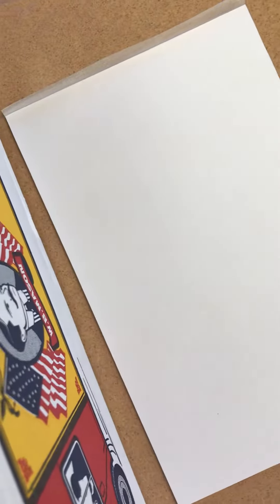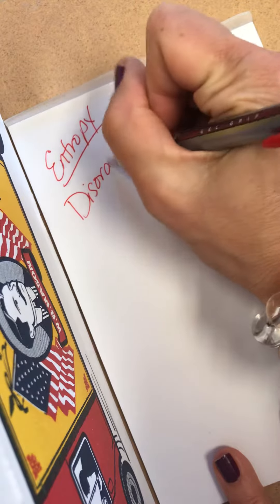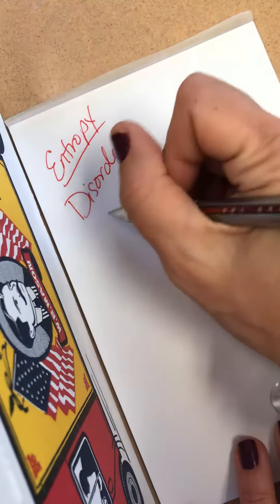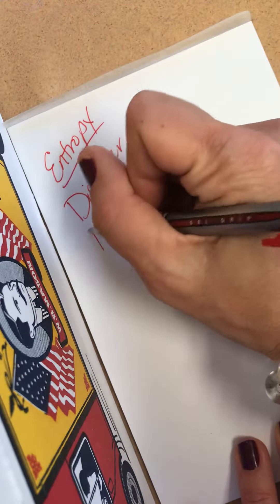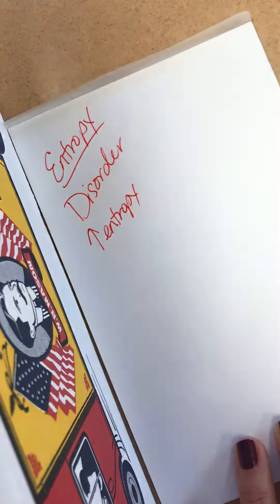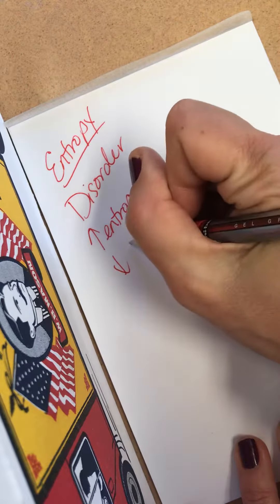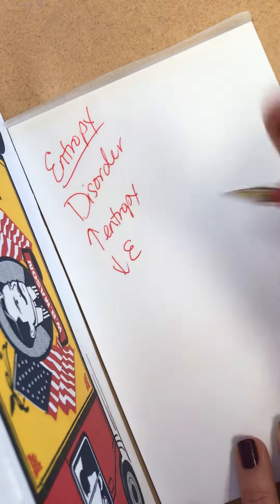Hi everybody, Mrs. Mancuso with some more chemistry review. Today's topic is entropy. Entropy means disorder. In nature, things tend to increase in entropy because they tend to become more disorderly. They also tend to decrease in energy over time.